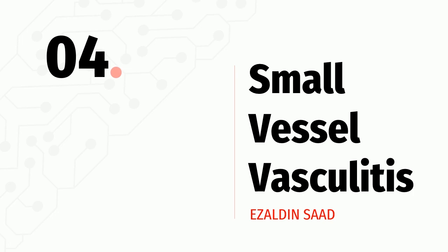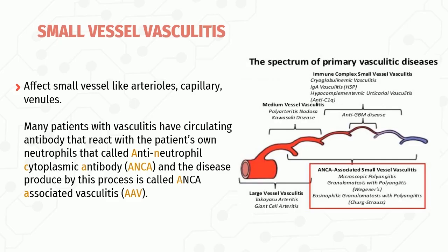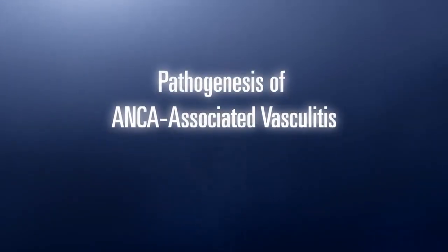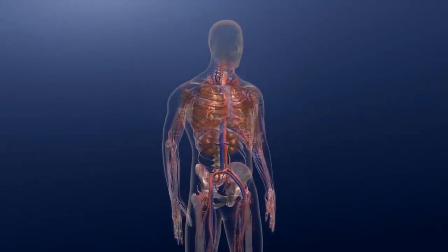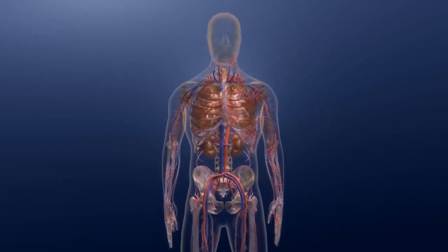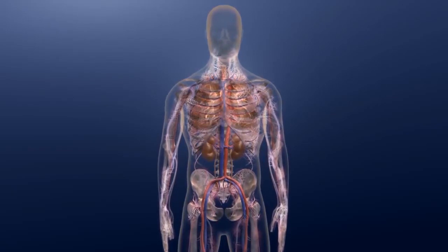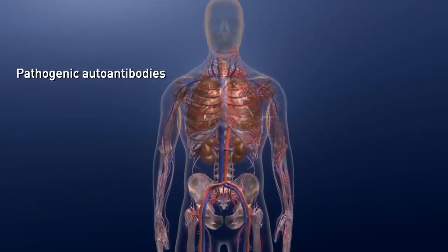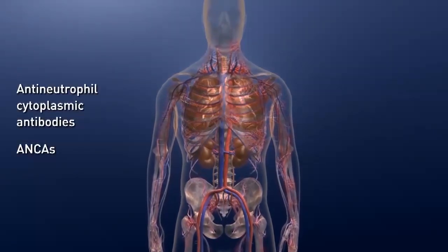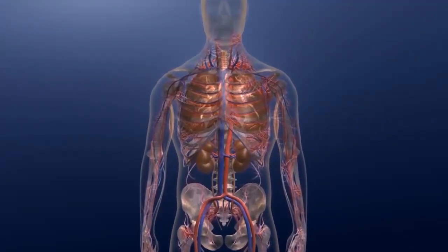I am Azeddin Saad and I will talk about small vessel vasculitis. Many patients with vasculitis have circulating antibodies that react with the patients' own neutrophils — these are called antineutrophil cytoplasmic antibodies (ANCA). The disease produced by this process is called ANCA-associated vasculitis (AAV), a rare disorder that may affect many organs by attacking blood vessels, most often smaller blood vessels. AAV often involves the blood vessels of the lungs and kidneys, but can also cause damage to vessels in the skin, eyes, and other organs.